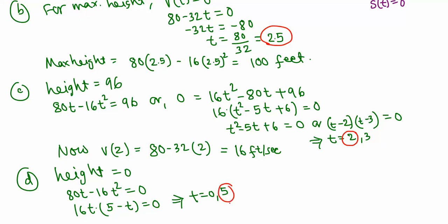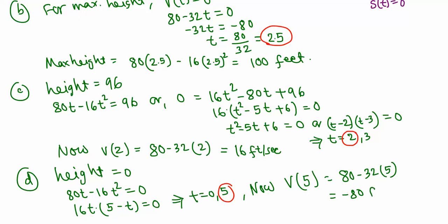Now we find the velocity on impact after 5 seconds. Using the velocity function 80 minus 32t and substituting t equals 5, we get 80 minus 32 times 5, which is 80 minus 160, giving negative 80 feet per second. The negative sign indicates the ball is moving downward.